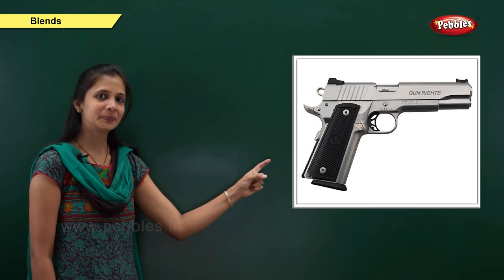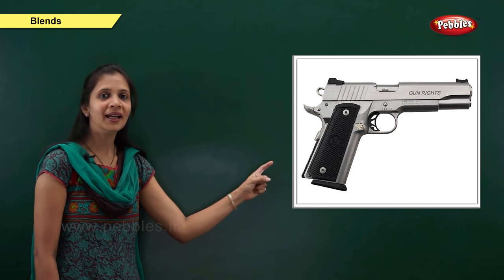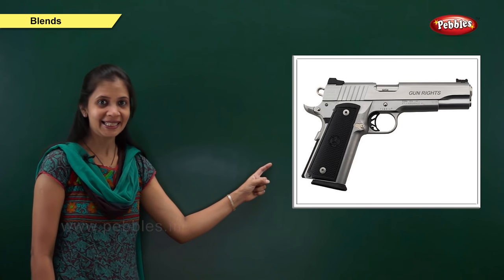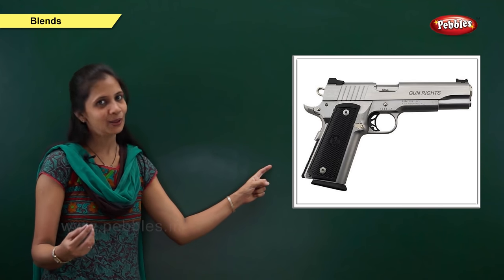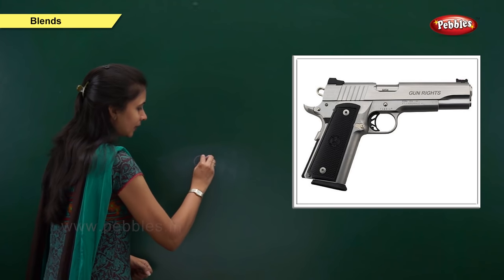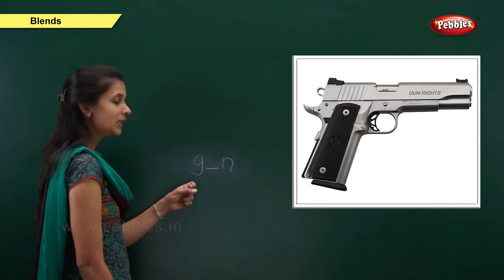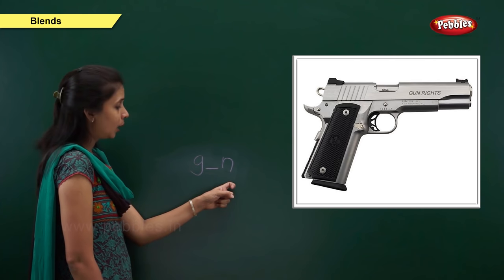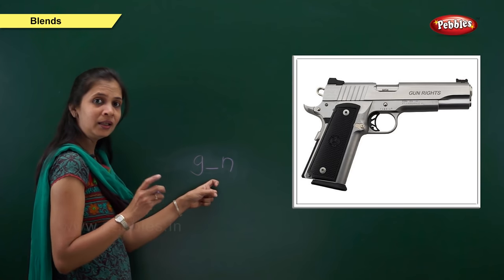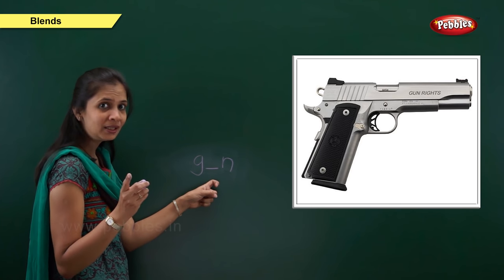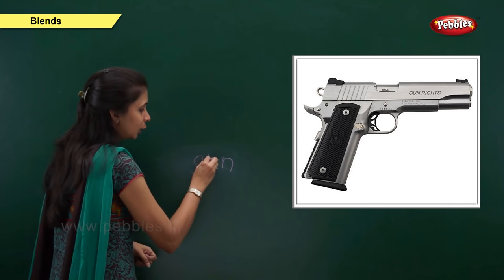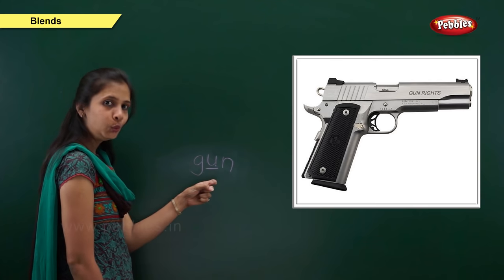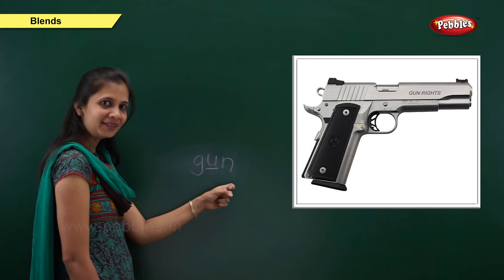Next one. What is it? Yes, it is gun. What is the sound of this word? G, a, n. When the sound is 'g', the letter is g. When the sound is 'n', the letter is n. What about the middle sound? The sound is 'a'. Which letter? It is u. The vowel u. So: g, a, n — gun. G, u, n — gun.